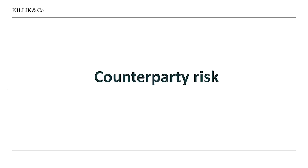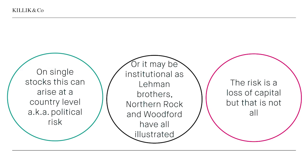Then there's counterparty risk. A lot of people overlook it or assume it won't happen to them. With single stocks, this can arise at a country level — political risk, for example, borders closing, capital controls being imposed. Or it can arise institutionally. There are countless examples: the collapse of Lehman Brothers, what happened to Northern Rock, Woodford's woes more recently — all illustrating the potential for counterparty risk.